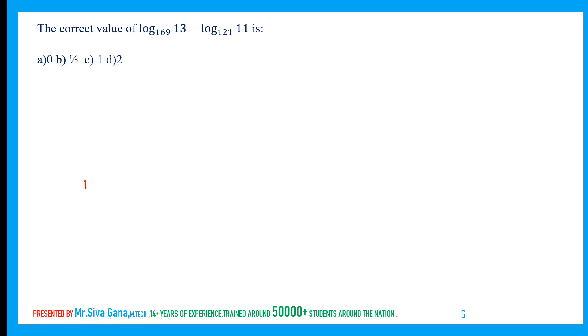Log value. Log a^x to base b^y is simply x/y times log a to base b. If I apply this one, 169 is 13 squared, 121 is 11 squared. So 1/2 log 13 to base 13 minus 1/2 log 11 to base 11. This is 1, this is 1. 1/2 minus 1/2 equals 0.